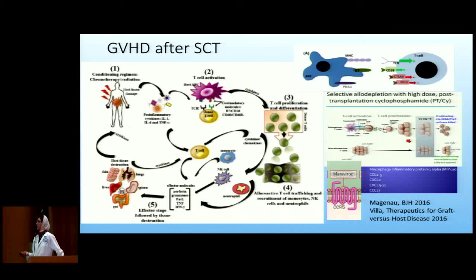T cell proliferation is important in how GVHD occurs. We now know that cyclophosphamide given after infusing stem cells can prevent the proliferation of activated T cells while not affecting antiviral T cells — that's the idea of post-transplant cyclophosphamide after haplo stem cell transplant. Then there's trafficking of T cells, which is very important — certain receptors mediate T cell trafficking to tissues, including CCR5 and other molecules. That's where Maraviroc comes in, which started as an anti-HIV medication and is now being used in clinical trials for prophylaxis and treatment of GVHD.